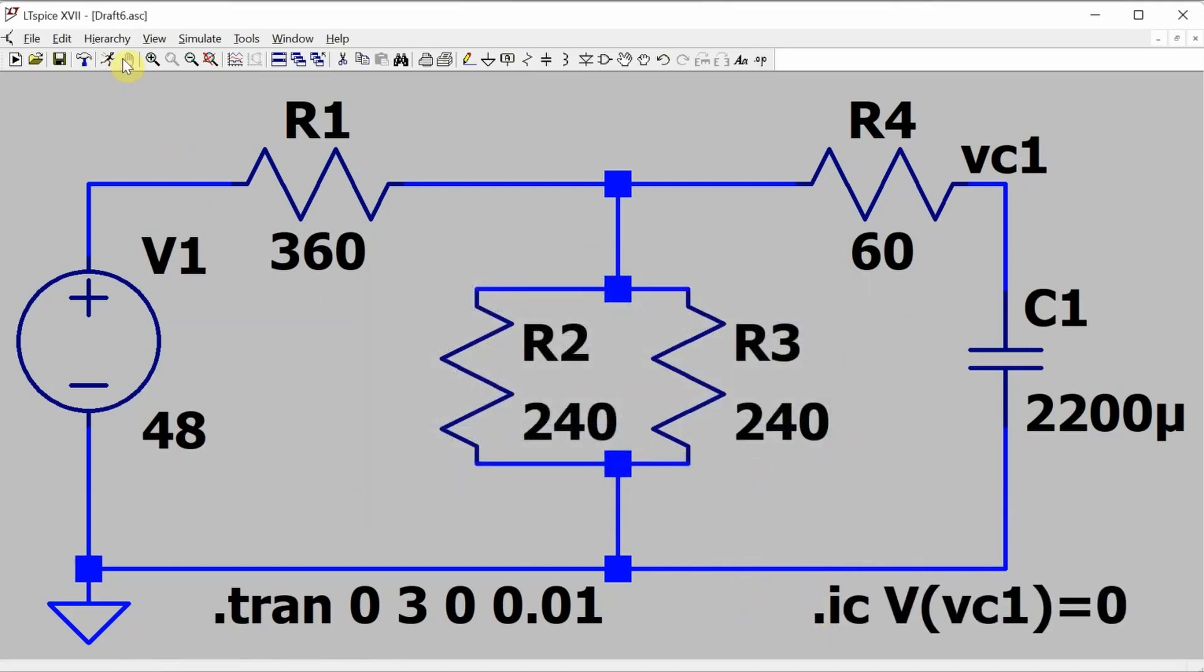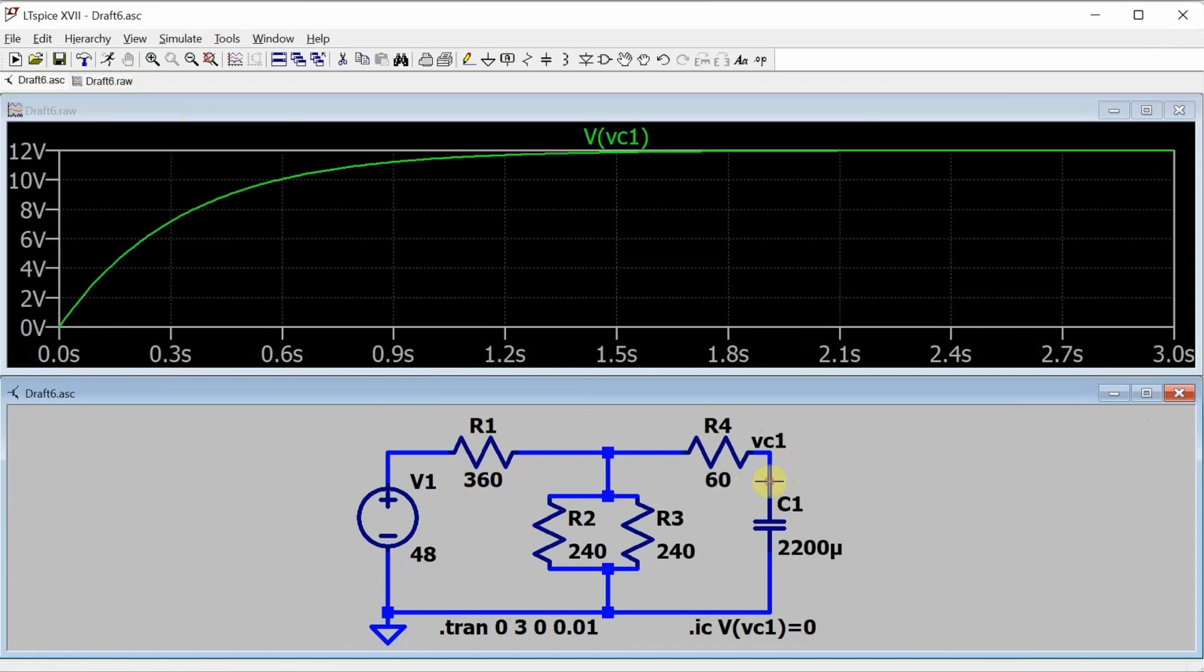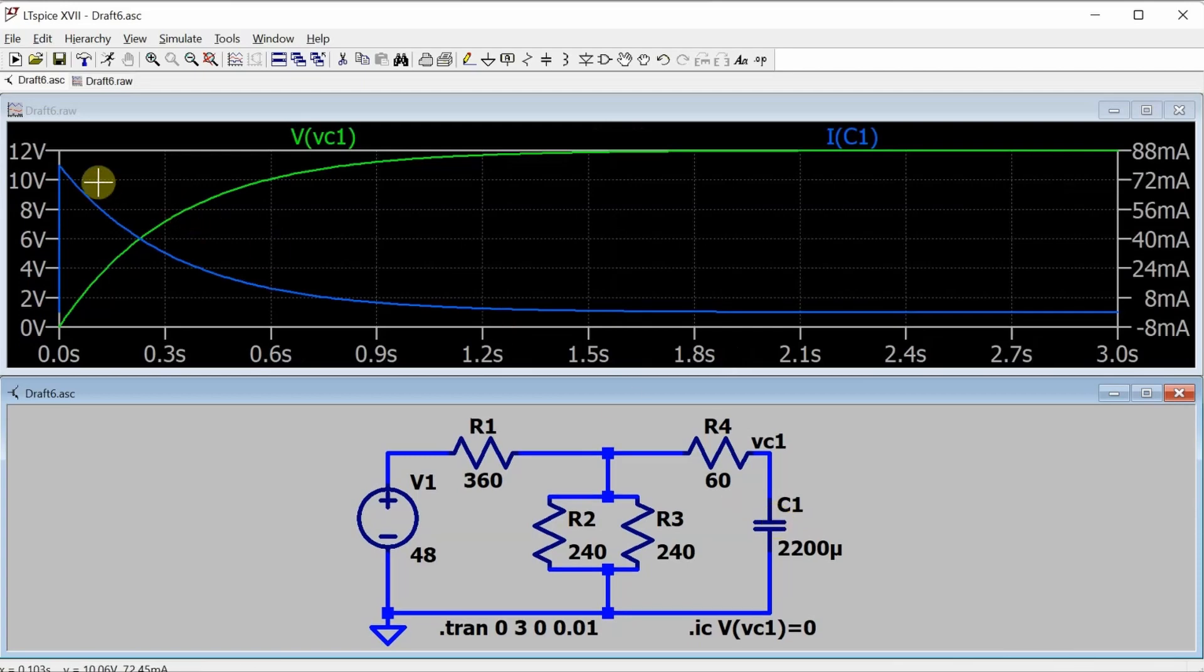Now when I go and simulate, I can take a look at the voltage across the capacitor, and I can see it charging up to 12 volts. And I'll take a look at the current through the capacitor, and I can see it starts at 80 milliamps and goes down to zero milliamps once the capacitor is fully charged.